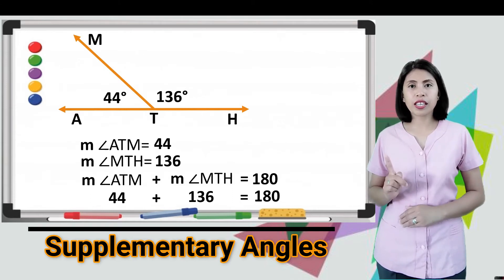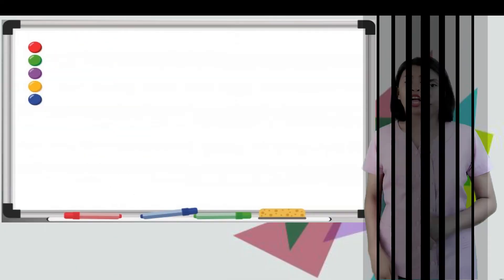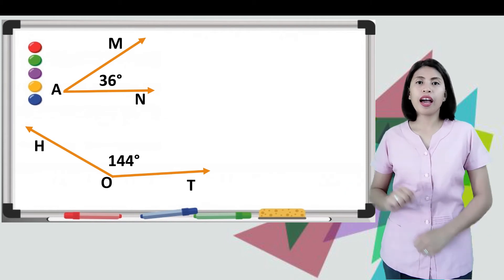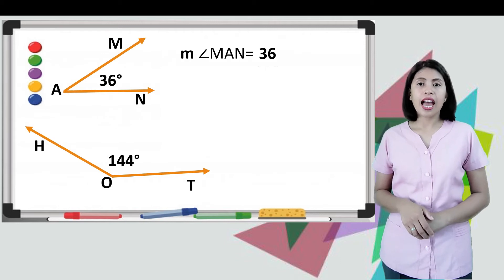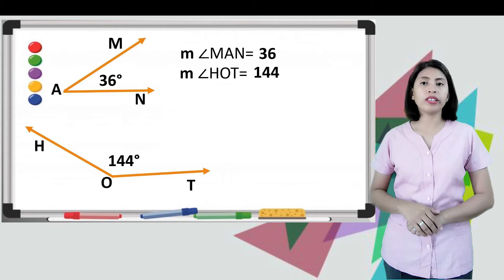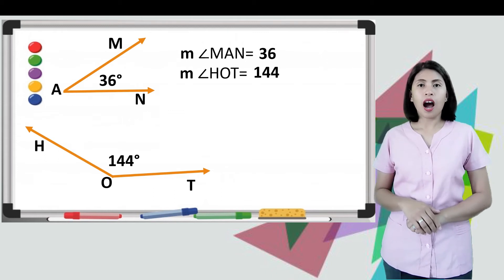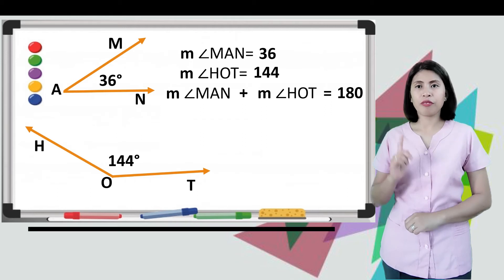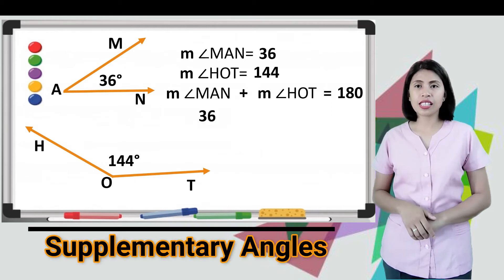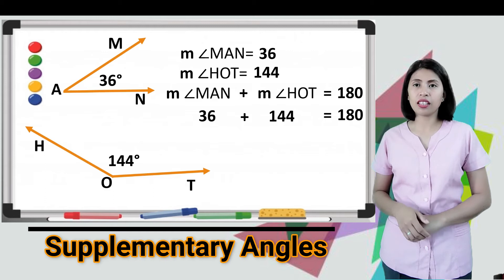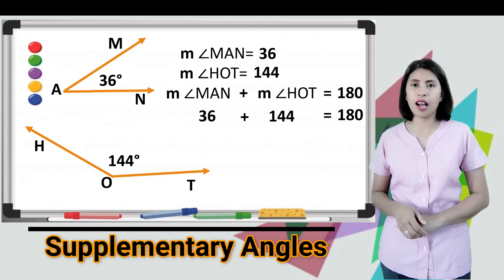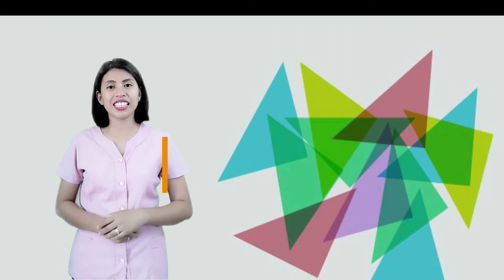Let's proceed to another example. We have angle MAN and angle HOT, wherein measure angle MAN is equal to 36, and measure angle HOT is equal to 144. Are they supplementary? Yes, because 36 plus 144 is equal to 180. Note that in supplementary angles, it is not necessary that the two angles are adjacent angles.